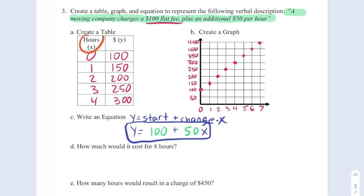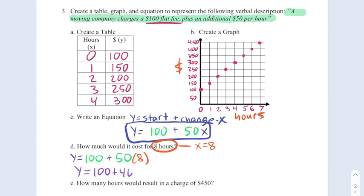Now if we look at our table, it tells us that the hours is X and the dollars is Y. We could label our graph the same way. And for this question, they ask us in part D, how much would it cost for eight hours? Eight would be an X value since hours is X. So they're telling us what X is, and we can plug that into the equation above. So I'm going to take this equation and replace X with eight. And then by simplifying, I get Y equals 100 plus 400, giving us an answer of Y equals 500. And that is money, so we'll say $500.